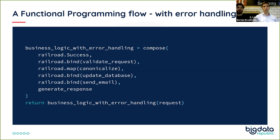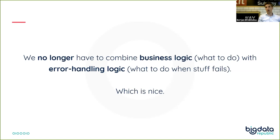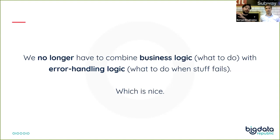We started off with a challenge to see what this would look like in Python. We went from a situation where we had to mix business logic with error-handling logic. By using this railway-oriented strategy, we've been able to move the error handling to the complete edge of the program and do it there, which means we no longer have to mix the two.